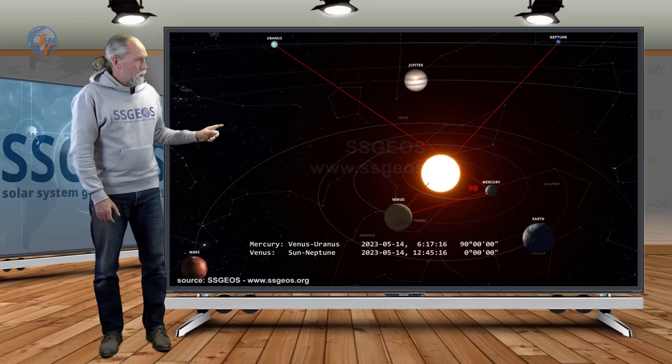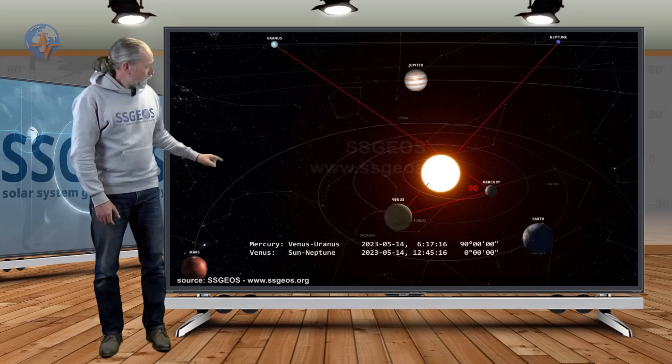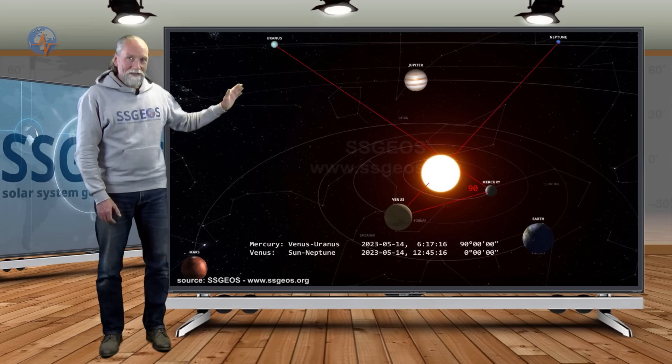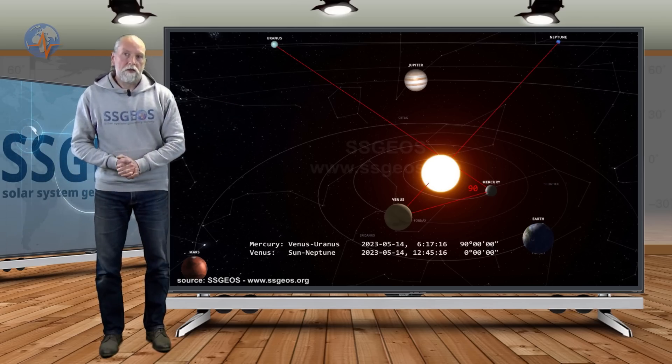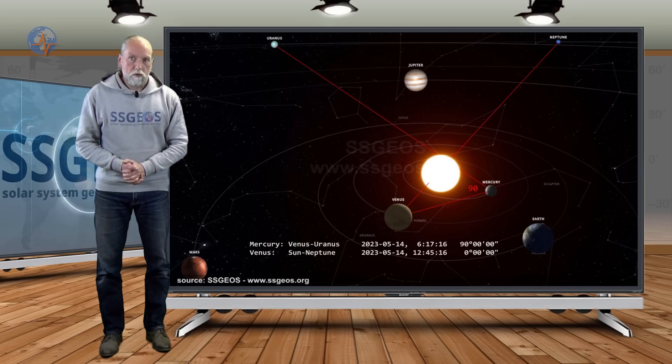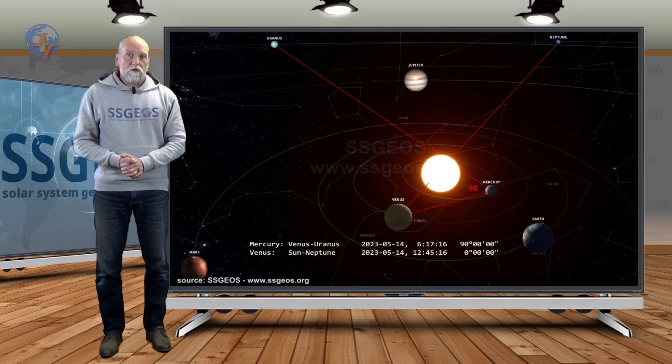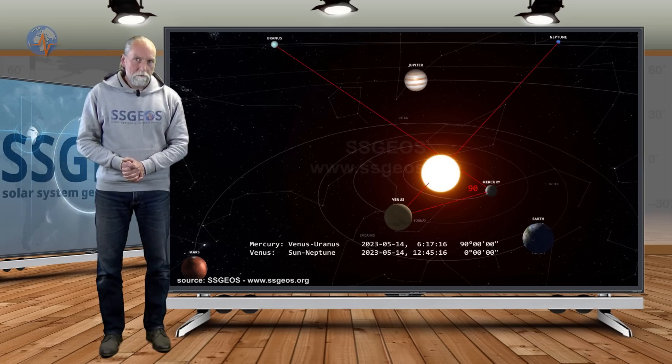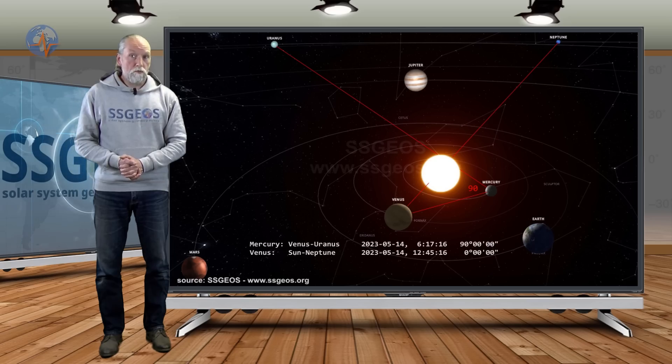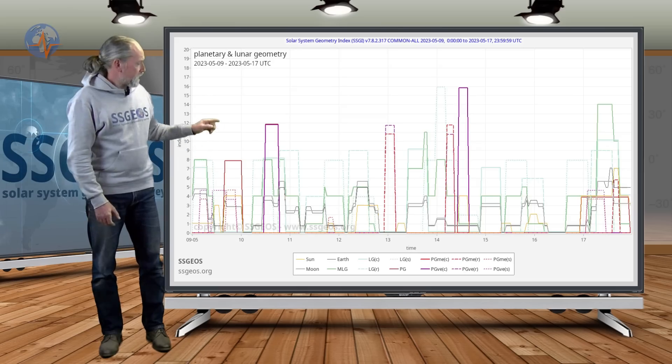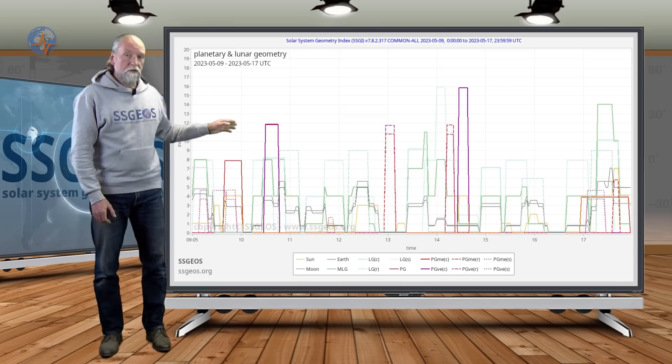And as you can see, we also have Venus, Sun, and Neptune in a conjunction, which comes on top of the critical geometry. So this is going to be a critical week. We could see strong to major seismic activity, possibly one or two magnitude 7 earthquakes, if we look at this planetary geometry on the 13th and 14th.